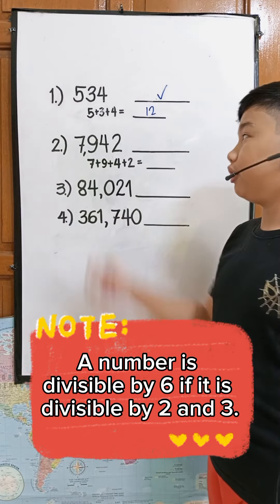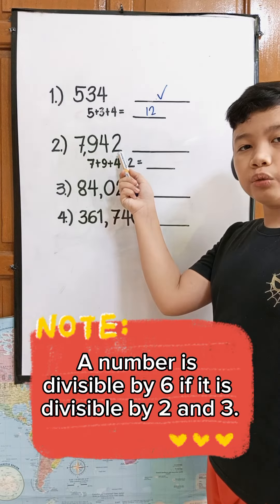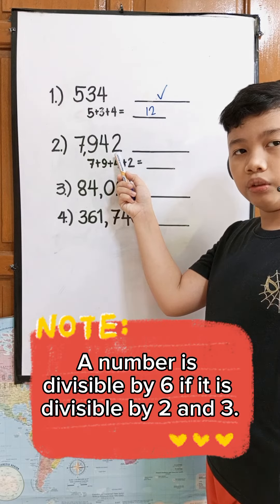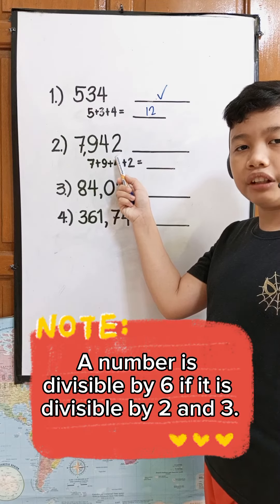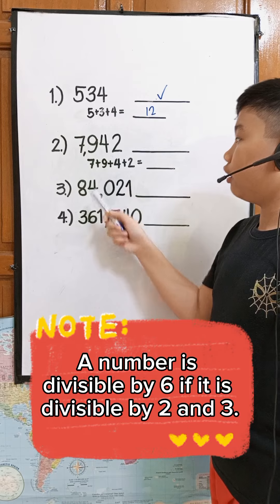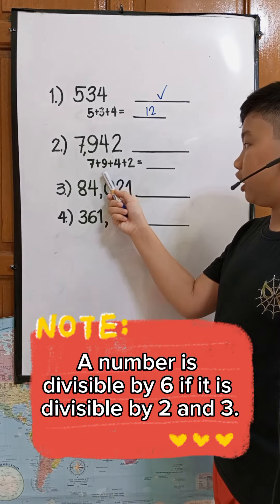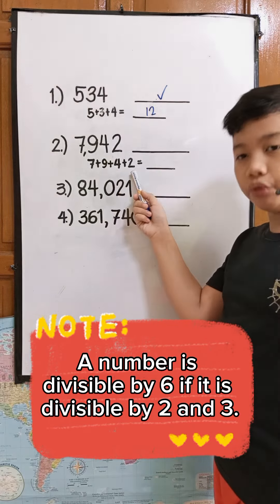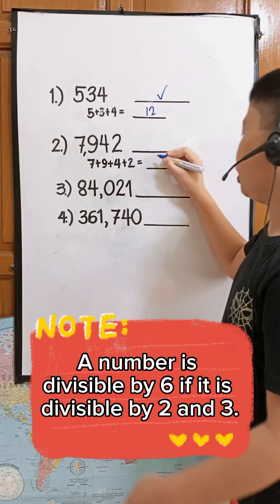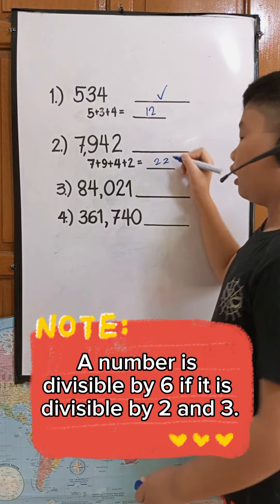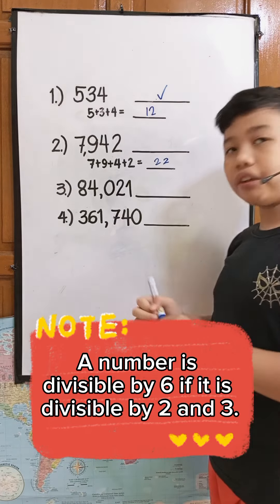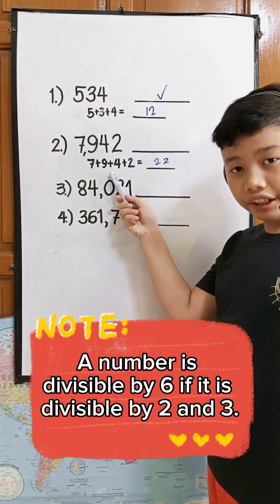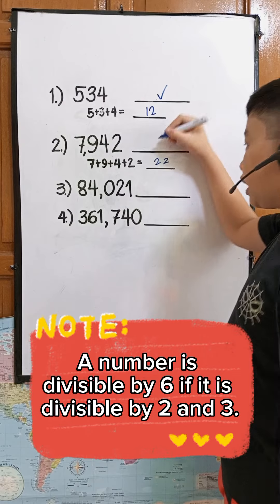Number 2. The ones digit is 2, and 2 is an even number, so it is divisible by 2. Now let us check if the number is divisible by 3. 7 plus 9 equals 16, plus 4 equals 20, plus 2 equals 22. And 22 is not divisible by 3. Even though it is divisible by 2 but not divisible by 3, it is not divisible by 6.